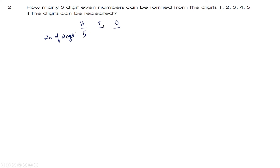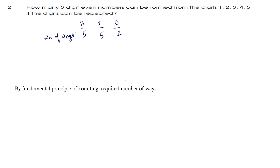Coming to the 10's place — since digits can be repeated, the 10's place can also be formed using 5 ways. In the 1's place, we can have only even numbers, which means we can have only 2 and 4. So the 1's place can be formed using only 2 ways. By the Fundamental Principle of Multiplication, the required number of ways is 5 into 5 into 2, which is 50 ways.